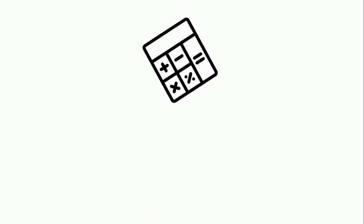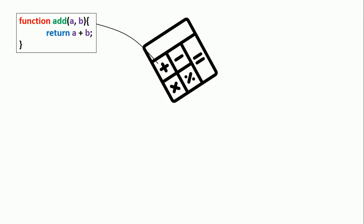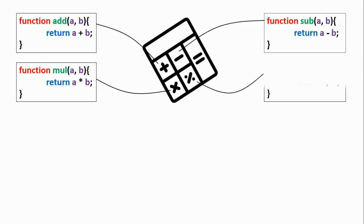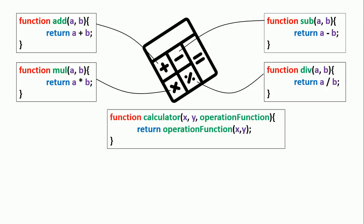Say we have a calculator that takes two numbers and performs one of the four operations. For the addition operation, we create a function called 'add' that takes two numbers and returns their sum. Same thing for subtraction, multiplication, and division. Now we create a function called 'calculator' that takes those two numbers x and y, and one of the operation functions.